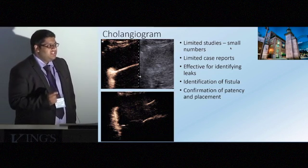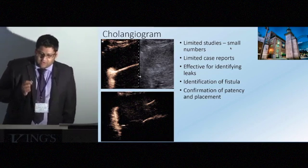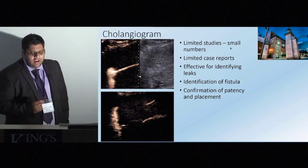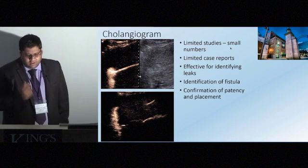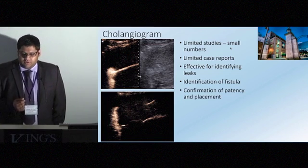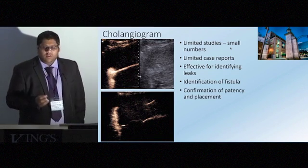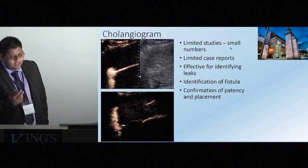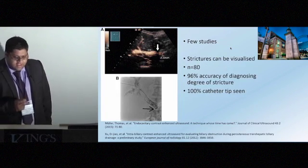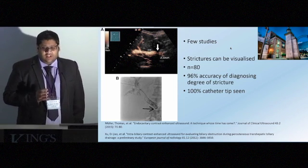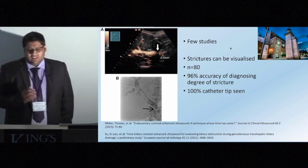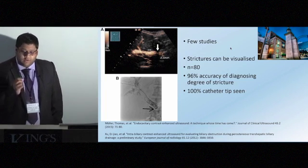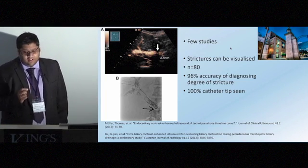What about the biliary system? This was a paediatric patient with a hepaticojejunostomy who had a biliary drain in situ, and we wanted to confirm the position. We can inject contrast through the tube and confirm filling of the roux loop — no leaks, no fistula — confirming patency and placement. Other studies, although very few in the literature, have gone further, showing we can identify strictures and determine whether they're complete or incomplete at the time of percutaneous cholangiogram.